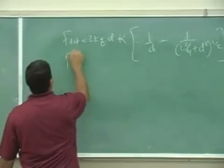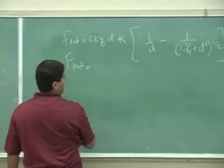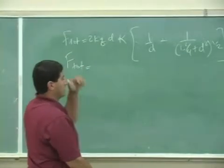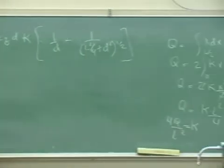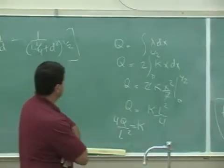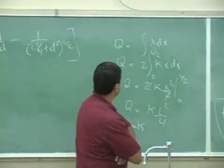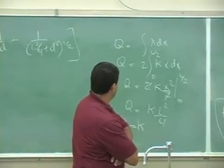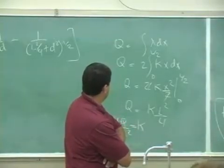Okay, now put that in here. 0 to L over 2, kappa, kappa x squared over 2, x, L squared over 4.